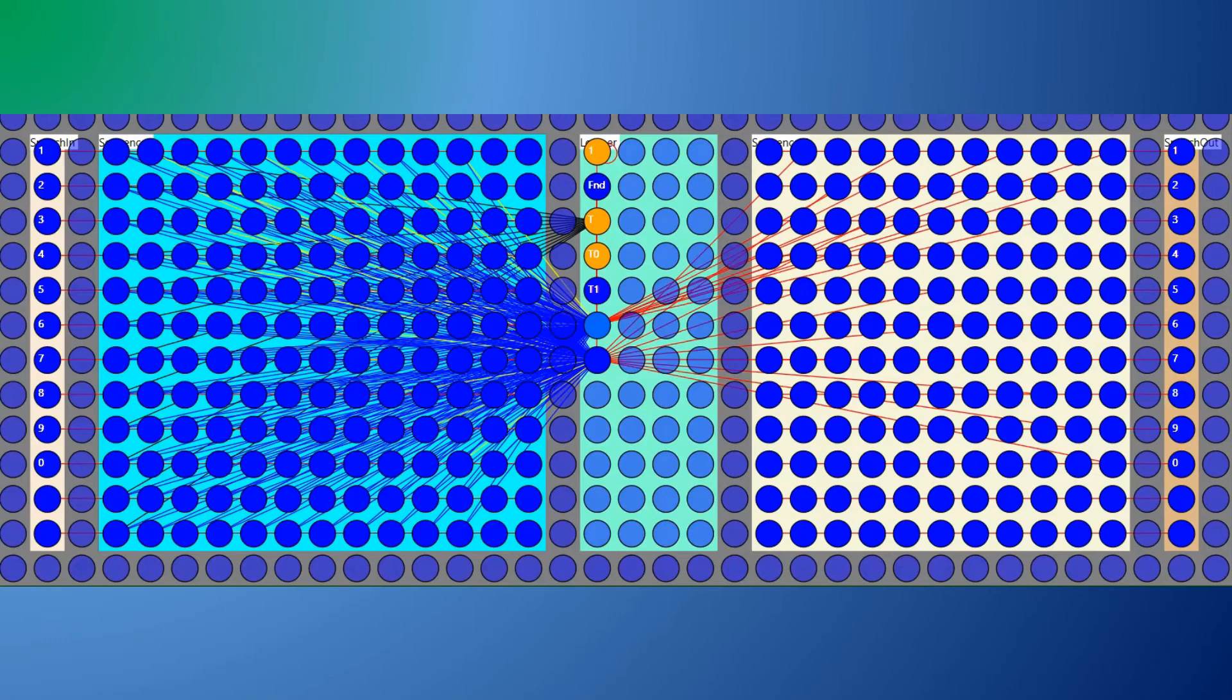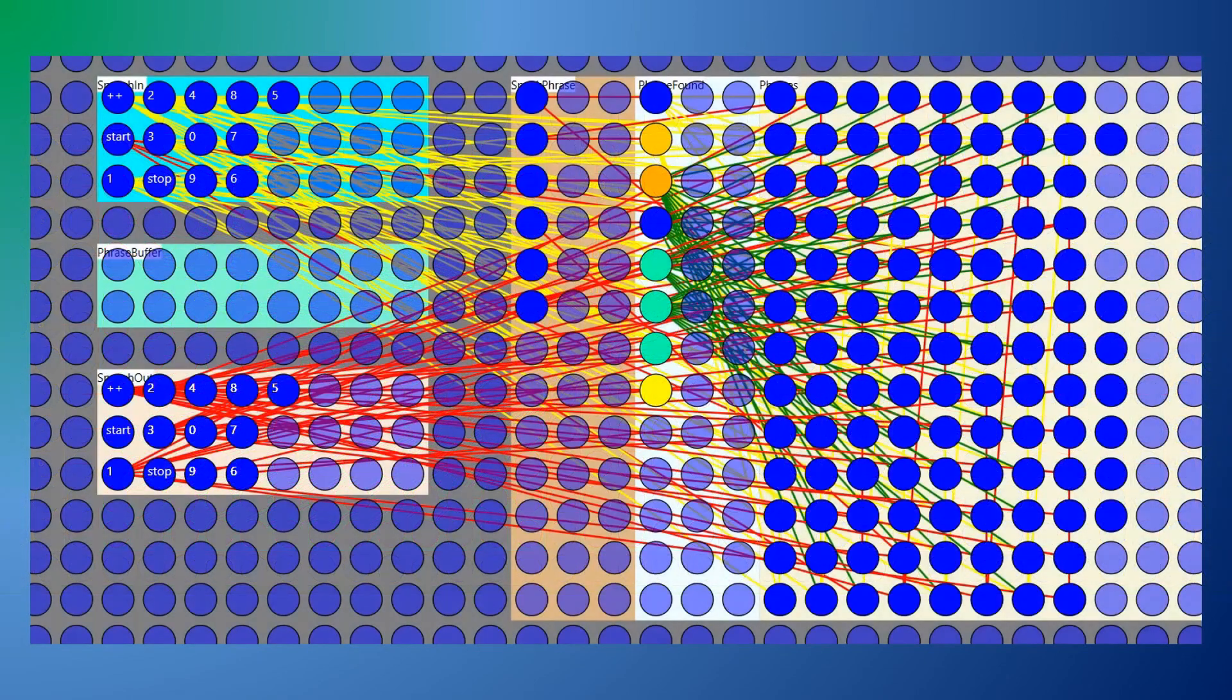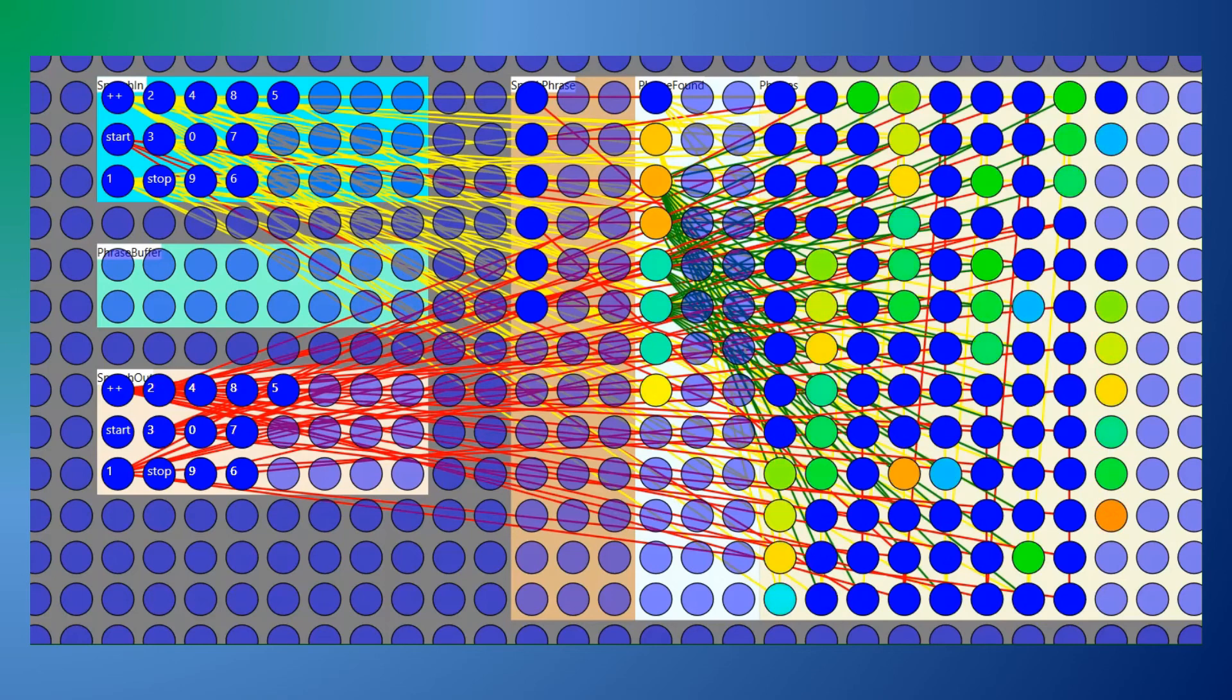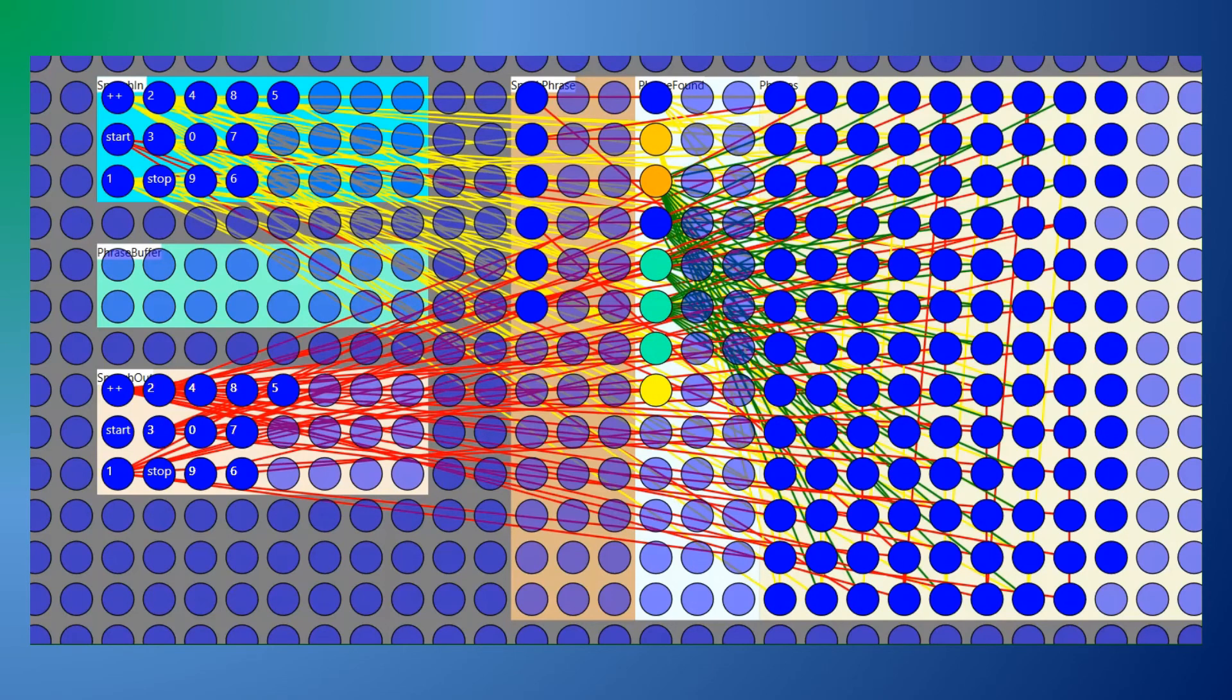Another approach to this problem stores just the sequences. It doesn't use as many neurons to set up and decode the data, but it uses more neurons to store the sequence. Computer: one, two, three, one, two, three, one, two, three, four. Computer: zero, nine, eight, seven, six, five, four, three, two, one.